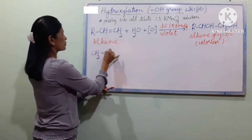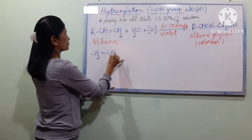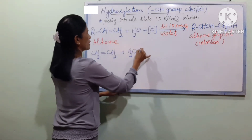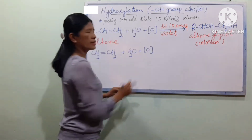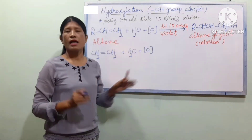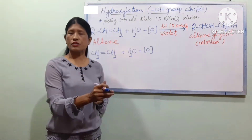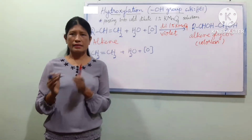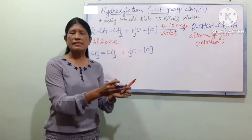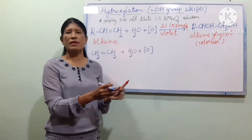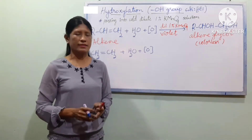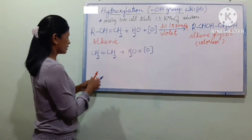CH2 double bond CH2, plus — we can use H2O. This is a new topic of hydroxylation. The alkene reacts with cold dilute 1% KMnO4.